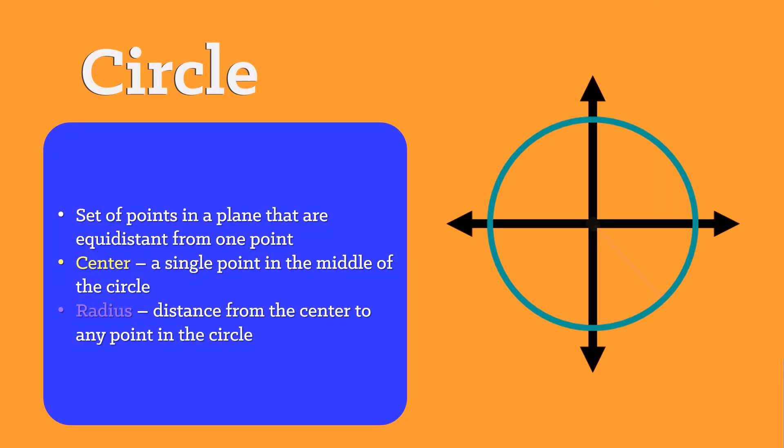Last but not the least, we have the circle. It is a set of points in a plane that are equidistant from one point. It contains the center and the radius.